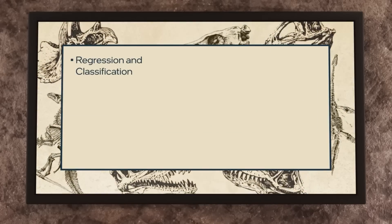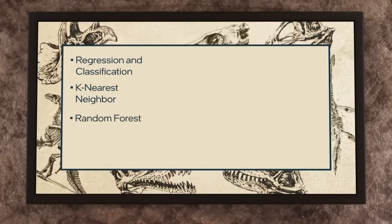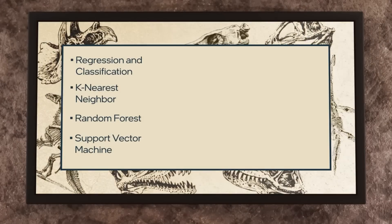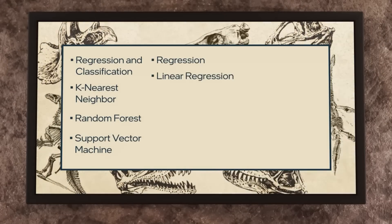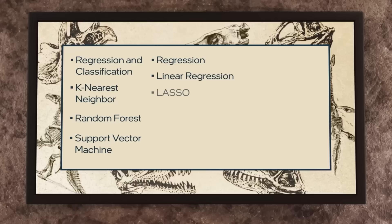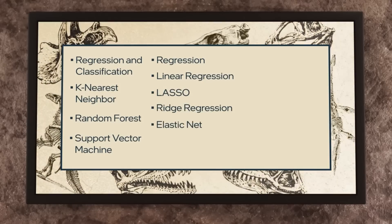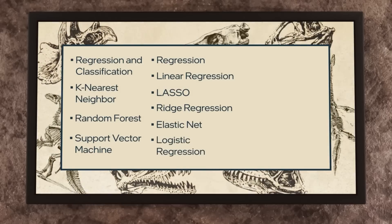Regression and classification algorithms such as k-nearest neighbor, random forest, and support vector machine are supported. We have quite a number of regression algorithms: linear regression, lasso and ridge regression, elastic net, and a faster version of logistic regression.